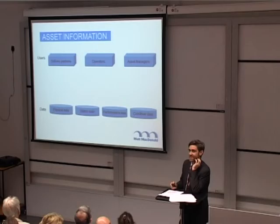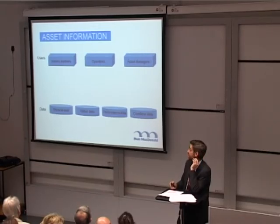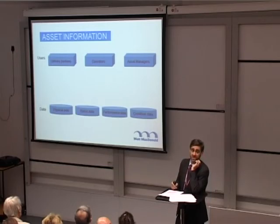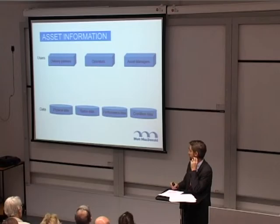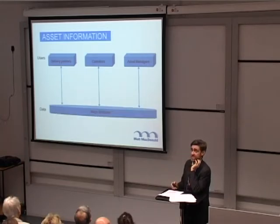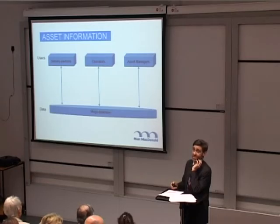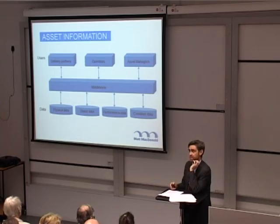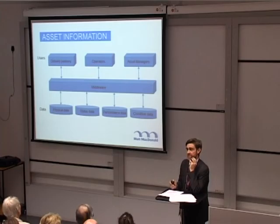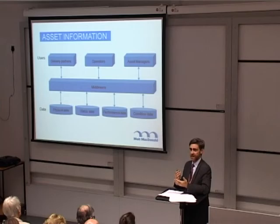On asset information management: at the moment we see asset information in separate databases — quite often somebody's drawer with paper in it. Data related to assets is really important: the physical data — what it is and where it is; the status data — what state it's in; the performance data — how it's performing; and the condition data — what state the actual asset is in. All of that data is separate and doesn't connect. The smart money is on middleware that sits in the middle, makes sense of that data, joins it together so that the guys at the top can make good sense of it and manage their assets. Asset information management is now built into ISO 55000.